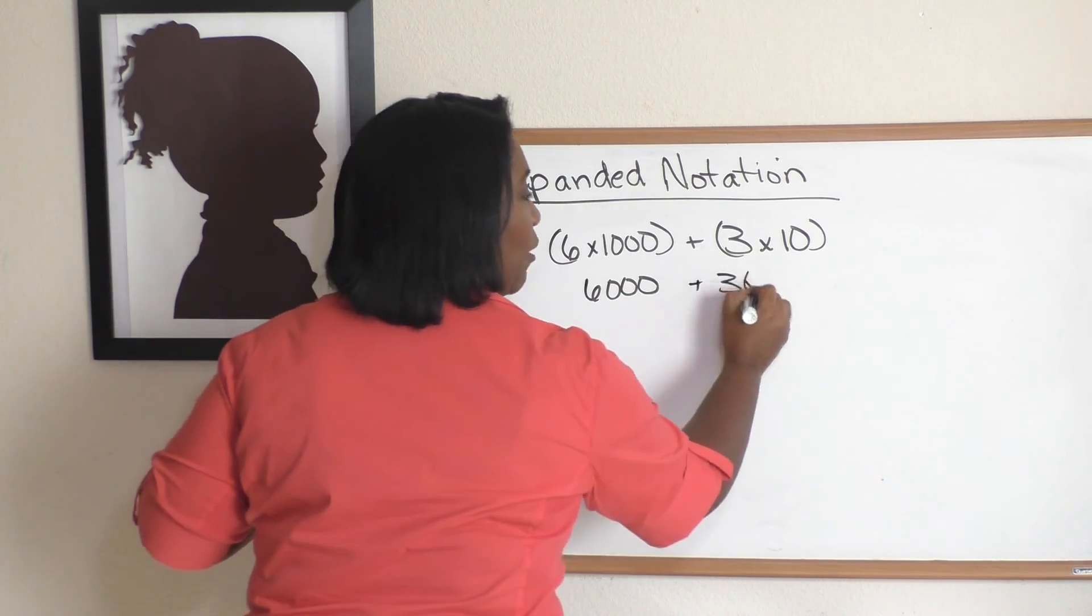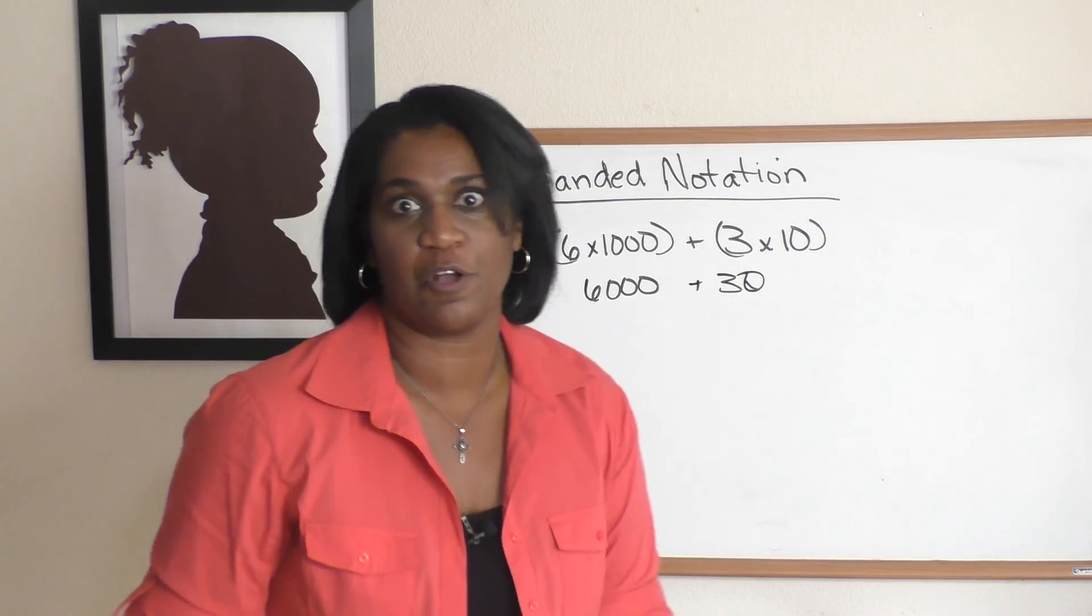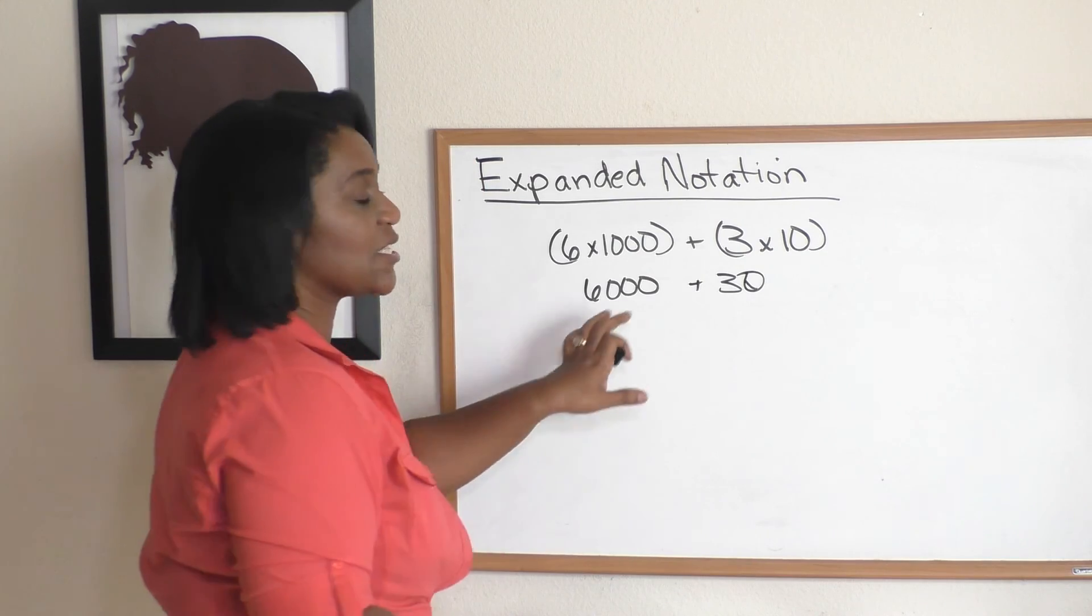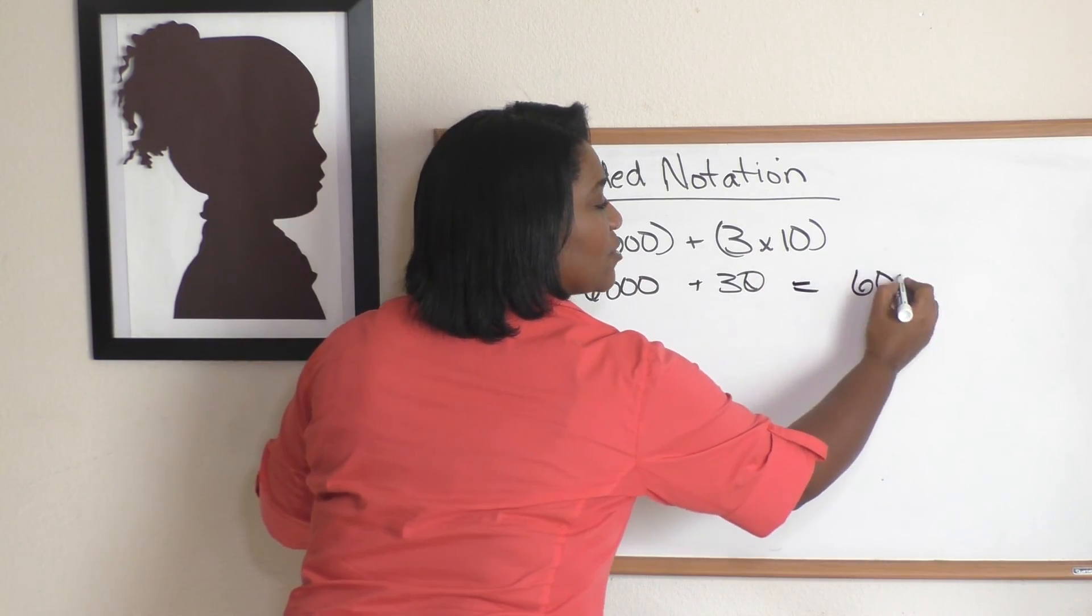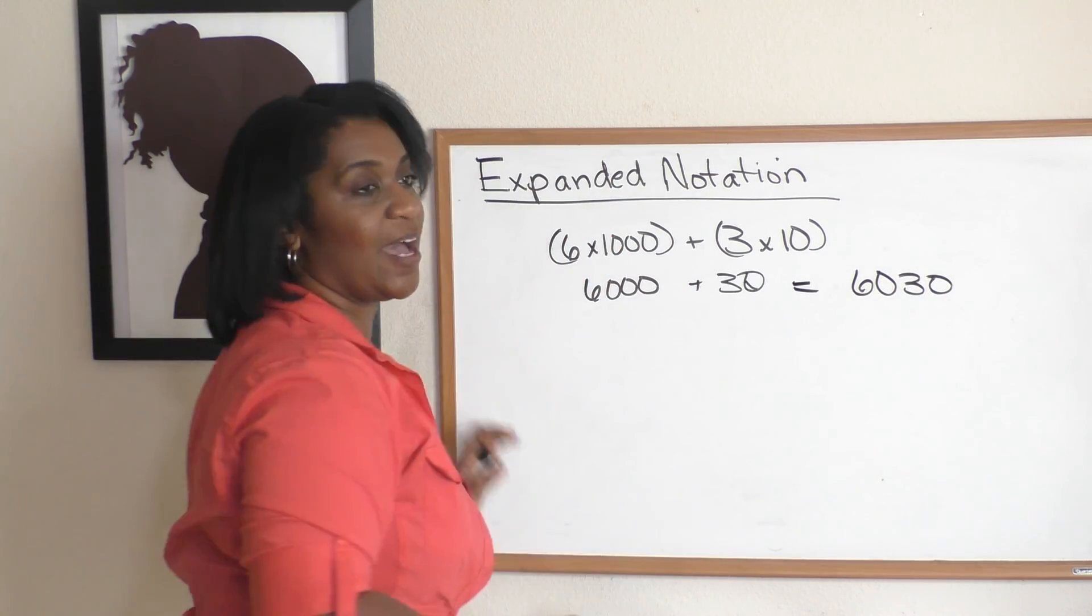Thirty. Six thousand plus thirty, which is the same thing as saying six thousand thirty. We just add it up, and bam, we're back to the way we always write numbers, which is what we call standard notation.